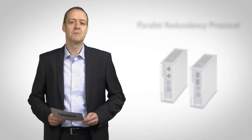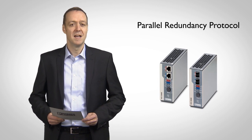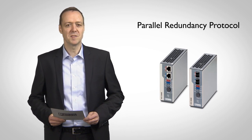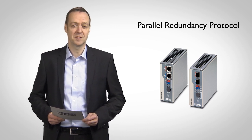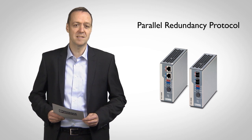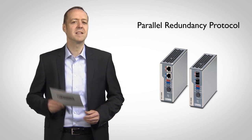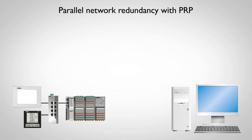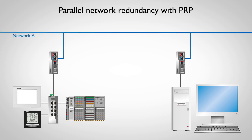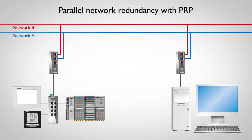With the Parallel Redundancy Protocol, also known as PRP, Phoenix Contact offers a redundancy mechanism which ensures interruption-free Ethernet data transmission even if parts of the network fail. Now let's take a closer look at it. Each device is integrated into the network via a PRP module. The modules are connected with one another via two separate networks, and data packages are therefore transmitted in parallel via both networks.